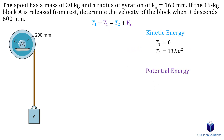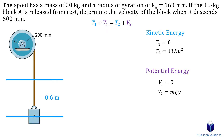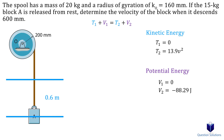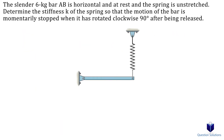We only need to consider the potential energy of the block, since the spool won't have potential energy. Drawing a datum through the center of the block at the start, the initial displacement is zero, so initial potential energy is zero. For the final potential energy, the block has moved 0.6 meters downward, so the displacement is negative. Plugging all values into the conservation of energy equation, we solve for the velocity of the block.